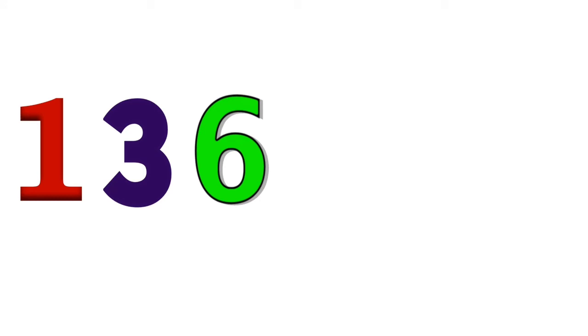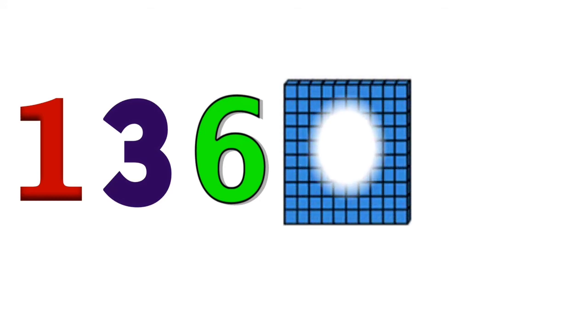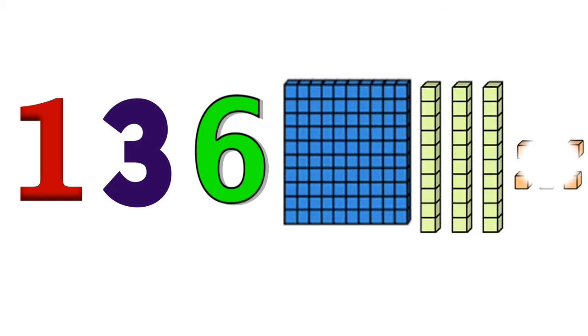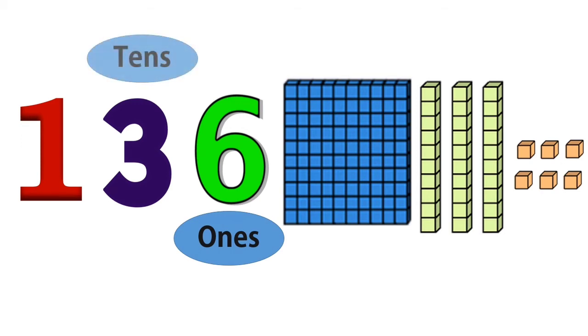Let us now go to the next example: one hundred and thirty-six. The number at the right, number six, it is at the ones place. Three, it is at the tens place, and the one, it is at the hundreds place.